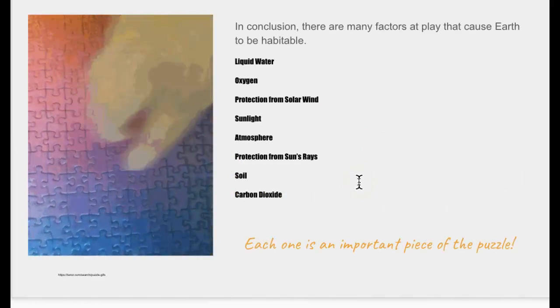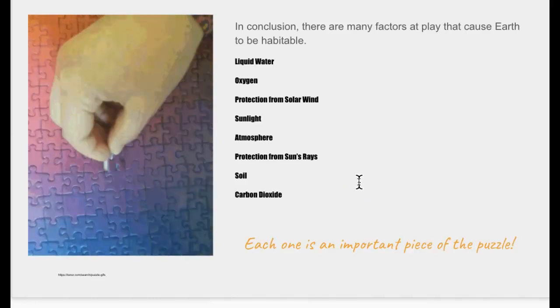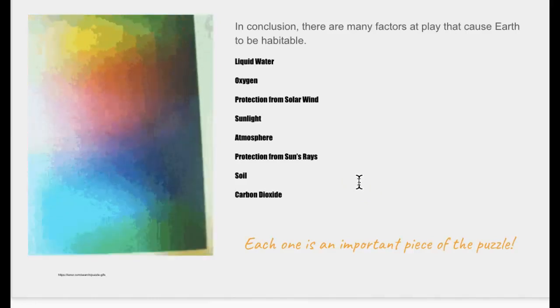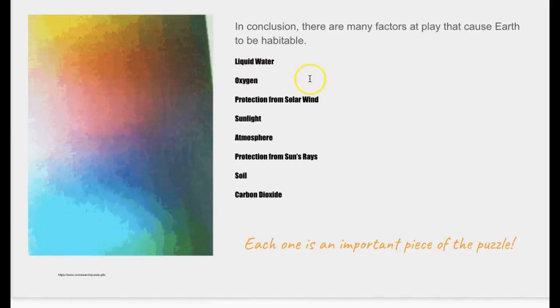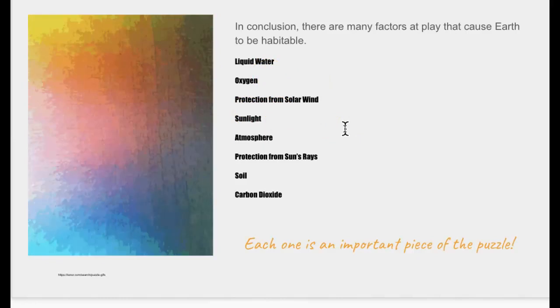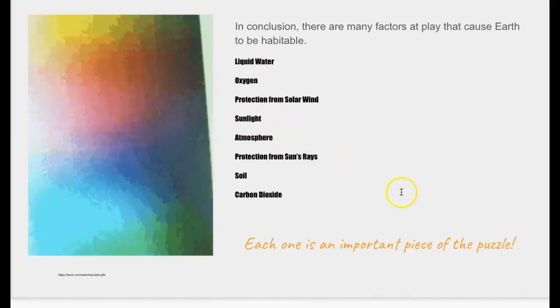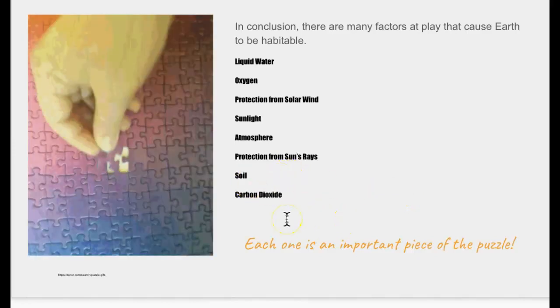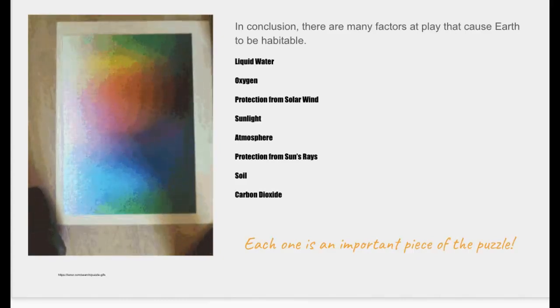There's lots of factors at play that work perfectly together that cause the earth to be habitable. I've included some here: liquid water, oxygen, protection from the solar wind, sunlight, atmosphere, protection from sun's rays, soil, and carbon dioxide. Each one of these is an important piece of the puzzle.